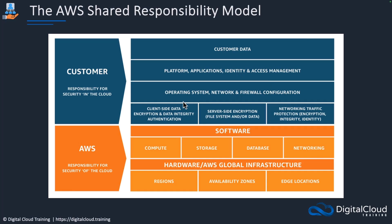Underneath that we've got operating systems. Now here, in some cases, AWS will manage things like the patches of operating systems. So there are some examples of where that's a shared responsibility, but mainly — for example, if you're using the Amazon EC2 service — then the Windows or the Linux updates are something that you have to manage.